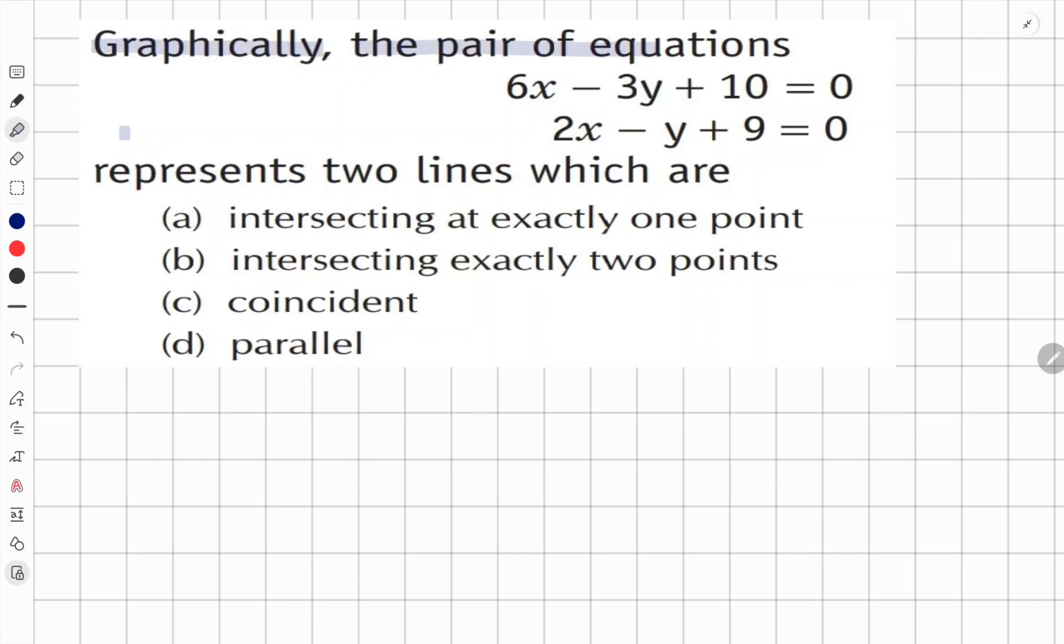Graphically, the pair of equations 6x minus 3y plus 10 equals 0 and 2x minus y plus 9 equals 0 represents two lines which are...what type of lines do they represent?